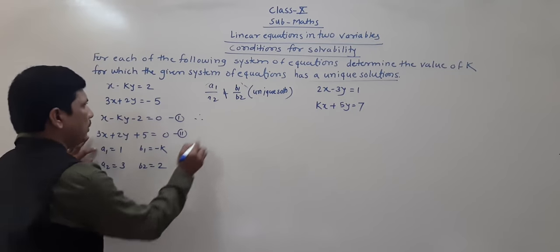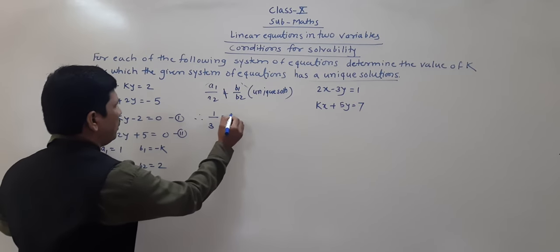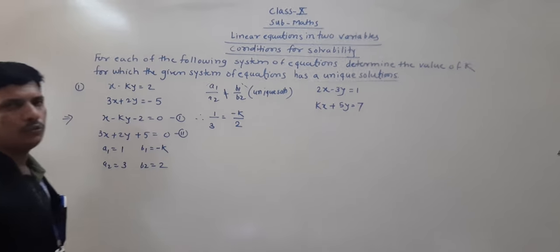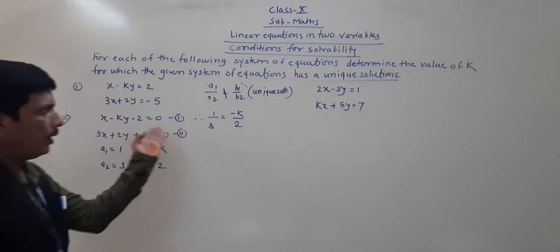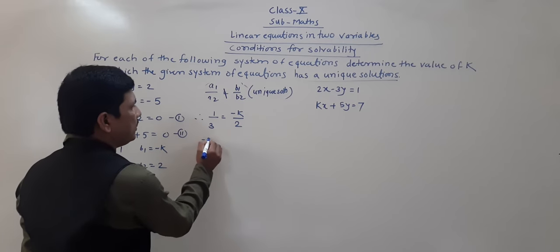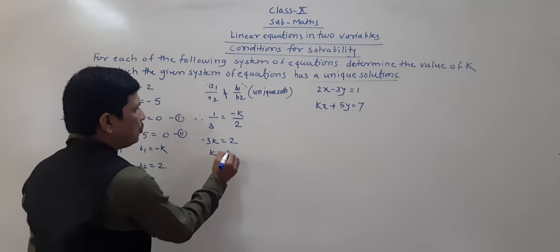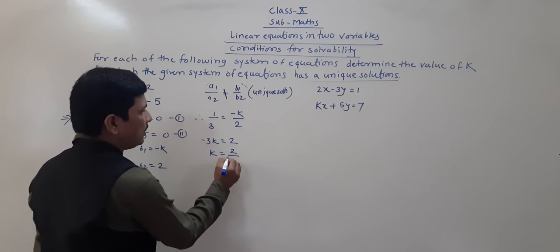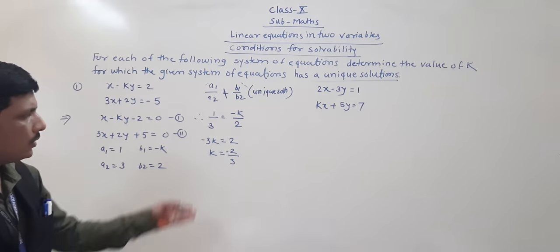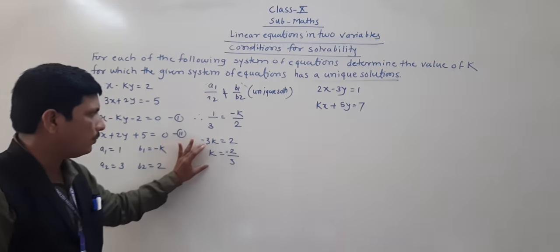So now: a1 is 1, so 1 by 3 is not equal to minus k by 2. Using cross multiplication, minus 3k is equal to 2. So k is equal to 2 by minus 3, that is minus 2 by 3. Whether we write minus 2 by 3 or 2 by minus 3, it is the same.